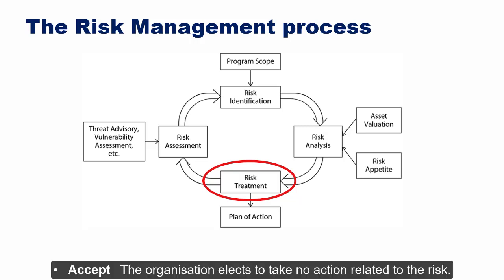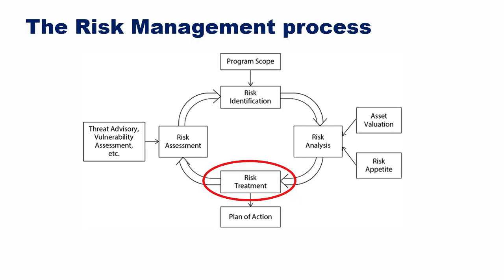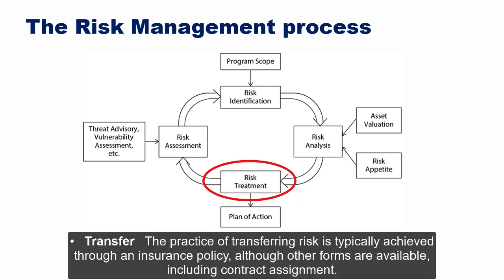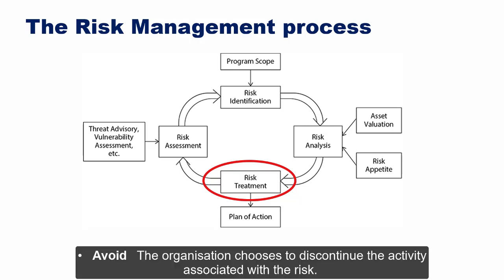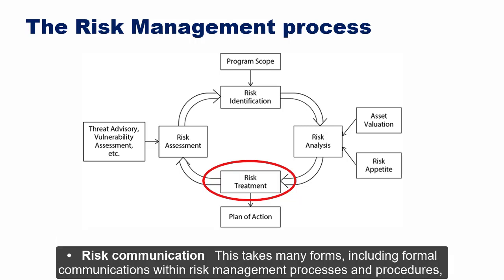The basic options for risk treatment are: Accept (the organization elects to take no action), Mitigate (reducing the probability or impact of a risk event through business process changes, configuration changes, enacting a new control, or staff training), Transfer (typically achieved through an insurance policy or contract assignment), and Avoid (discontinuing the activity associated with the risk, typically for outdated or unapproved business activities).